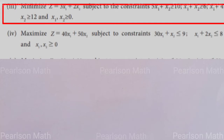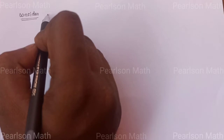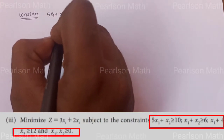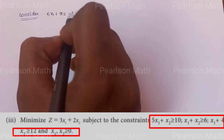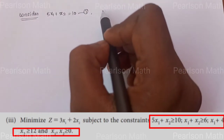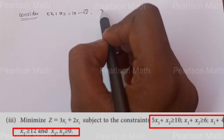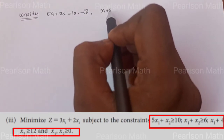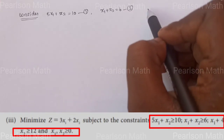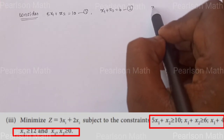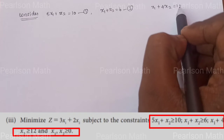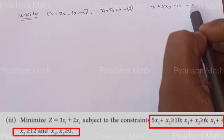We need to find the minimum. First, we convert the inequalities to equations — totally 3 equations: First equation: 5x1 plus x2 equal to 10. Second equation: x1 plus x2 equal to 6. Third equation: x1 plus 4x2 equal to 12.